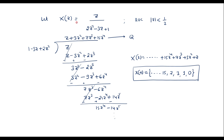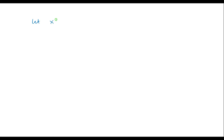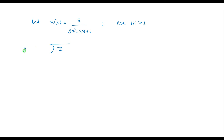Now consider the same example with ROC |Z| > 1/2. In that case we represent the numerator and denominator in descending powers of Z. So we perform long division of Z divided by (2Z² - 3Z + 1), dividing to obtain negative powers of Z for a causal sequence.